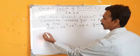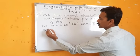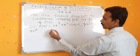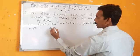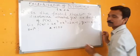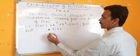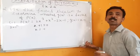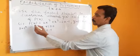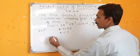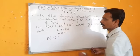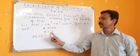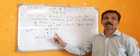Solution: g of x is equal to x plus 1, so x plus 1 equals 0, meaning x equals minus 1. Place this value in p of x — it becomes p of minus 1. Wherever x comes, you have to place the value as minus 1.